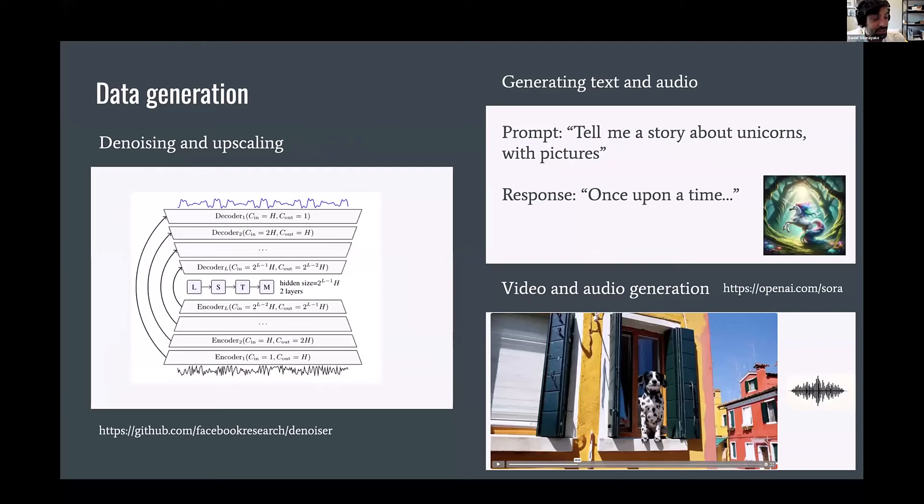And then data generation is the other one. So maybe we can denoise or upscale data. We just saw the super resolution work from Perceive, which is really, really fascinating. Generating text and audio. This is the classic one that everyone's so pumped about at the moment. ChatGPT, being able to talk about stuff and generate images. And then we can generate video and audio. So OpenAI SORA model, which has been publicized recently, they're generating video from free-form text. So really exciting stuff there.